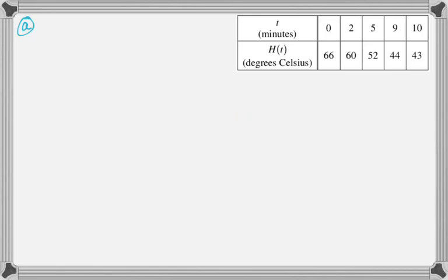So we're told as a pot of tea cools, the temperature of the tea is modeled by a differentiable function H between 0 and 10, where t is measured in minutes and temperature H(t) is measured in degrees Celsius. We're given values of H(t), and then we're asked a bunch of questions.